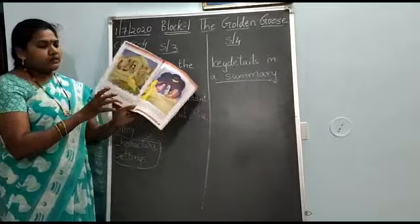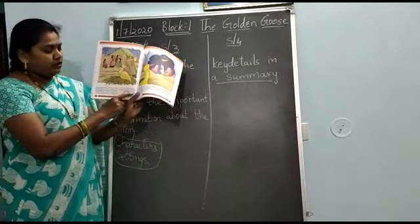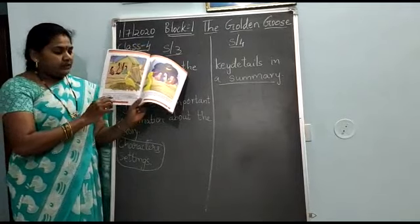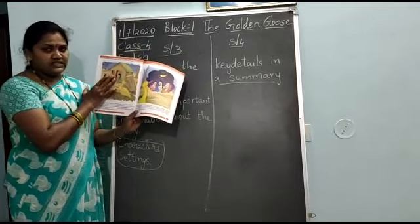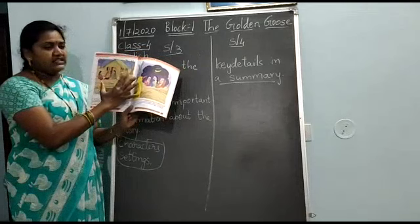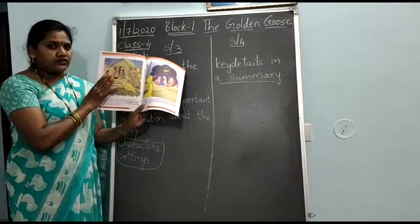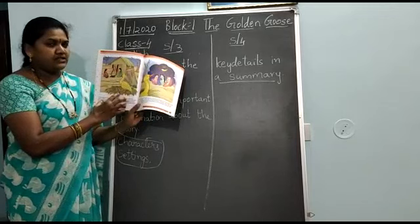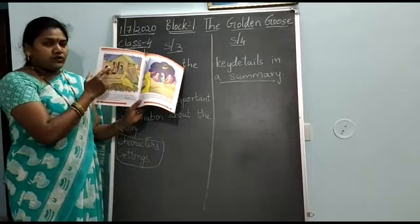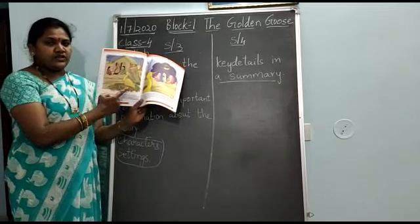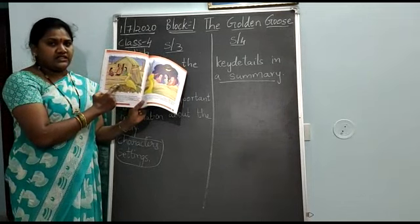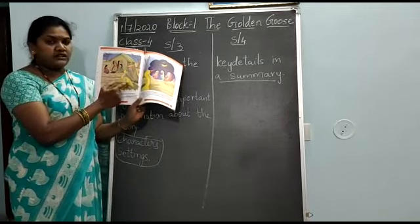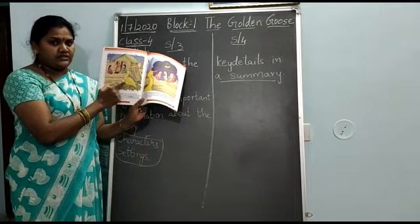In this first paragraph they have told you about what is happening. That means they have described the characters and the settings. The main key detail in this page is showing about the characters as well as the setting. How many characters are there? Old woman, her two daughters and the goose — four characters.